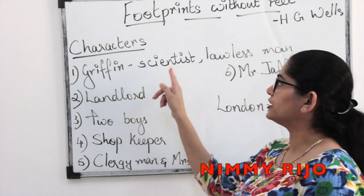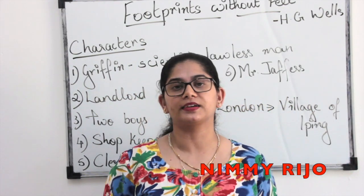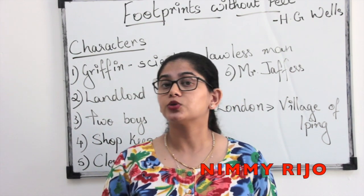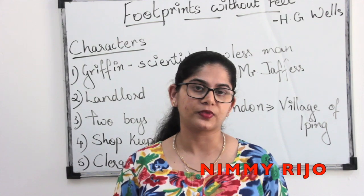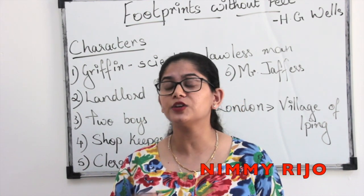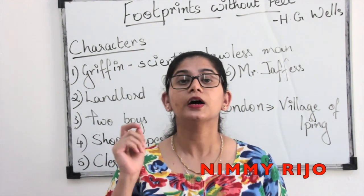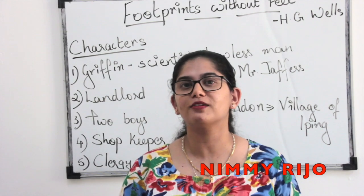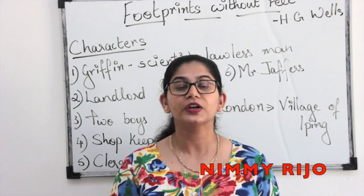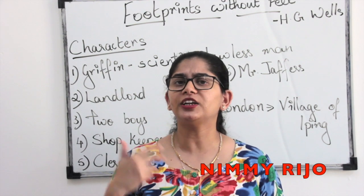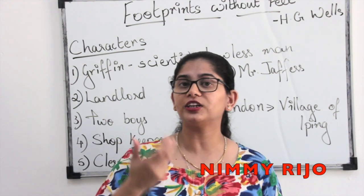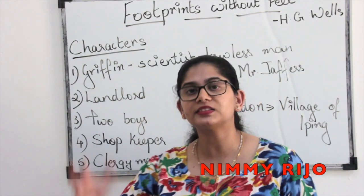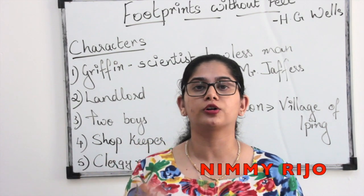Griffin is basically a brilliant scientist. He was always trying and performing new tasks. He found a medicine — by combining many drugs — to be invisible. He could have given these medicines to police officers or anyone else who wanted help, but as he was a lawless man, he started using that medicine by his own and started to do a lot of pranks.